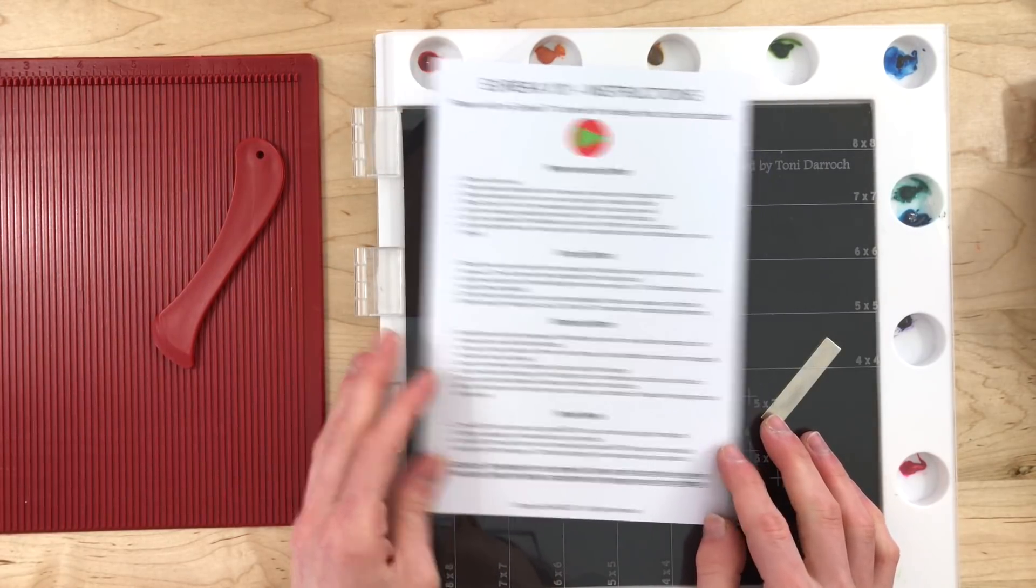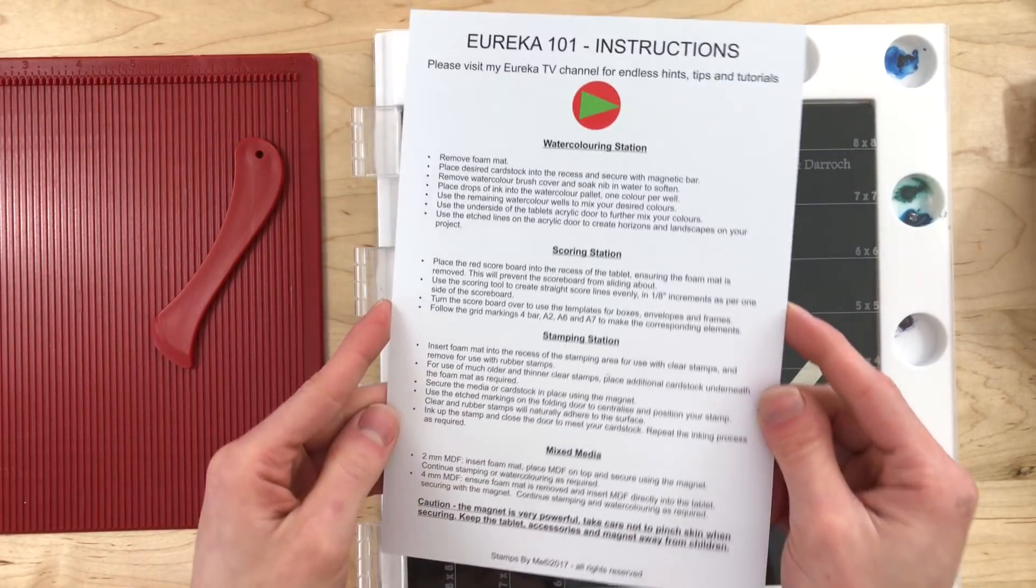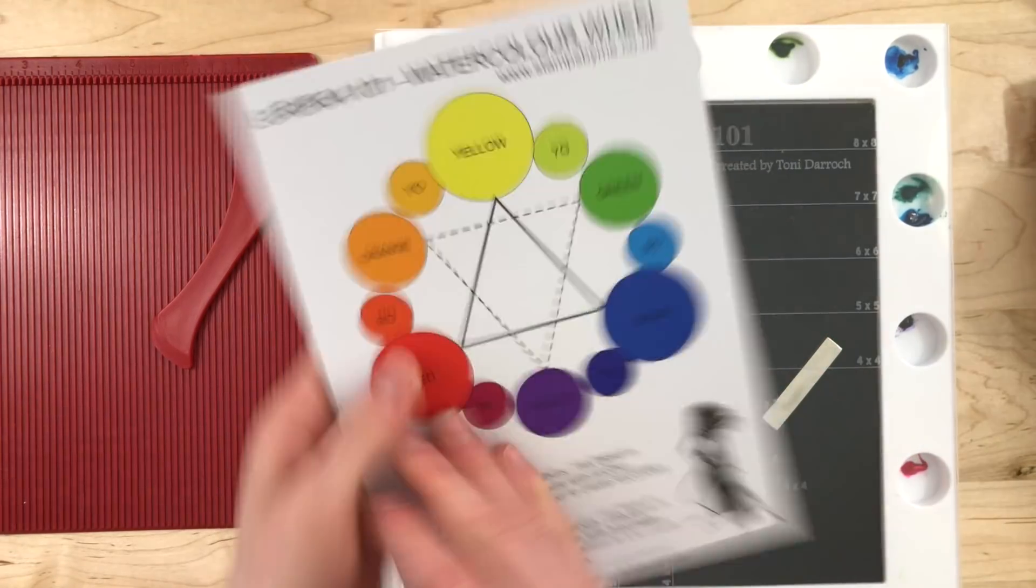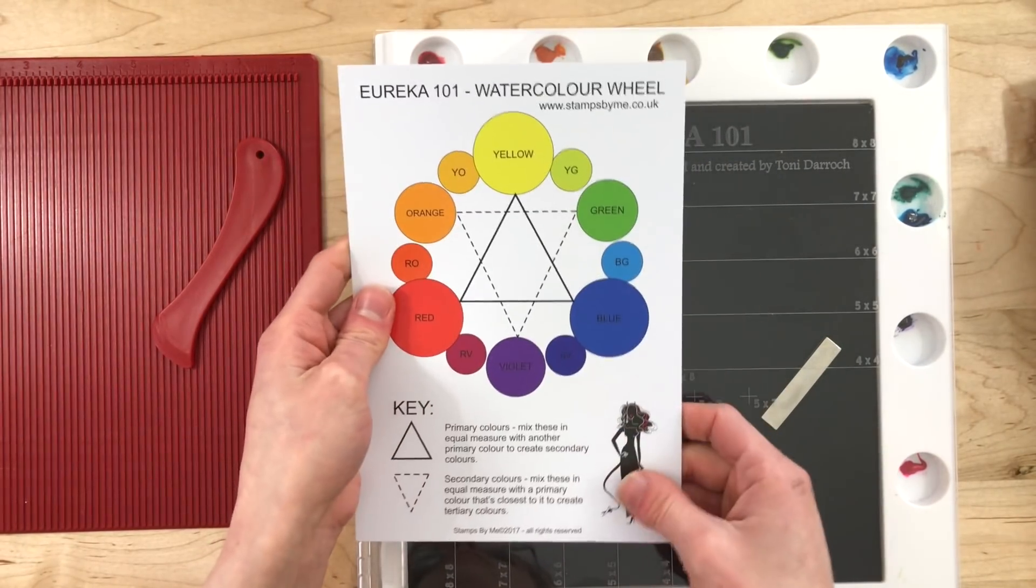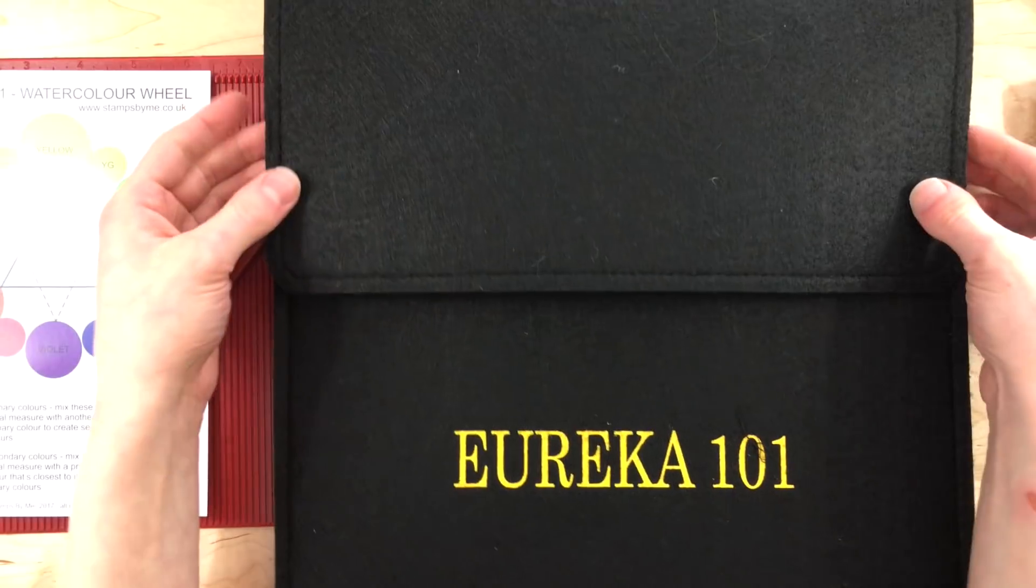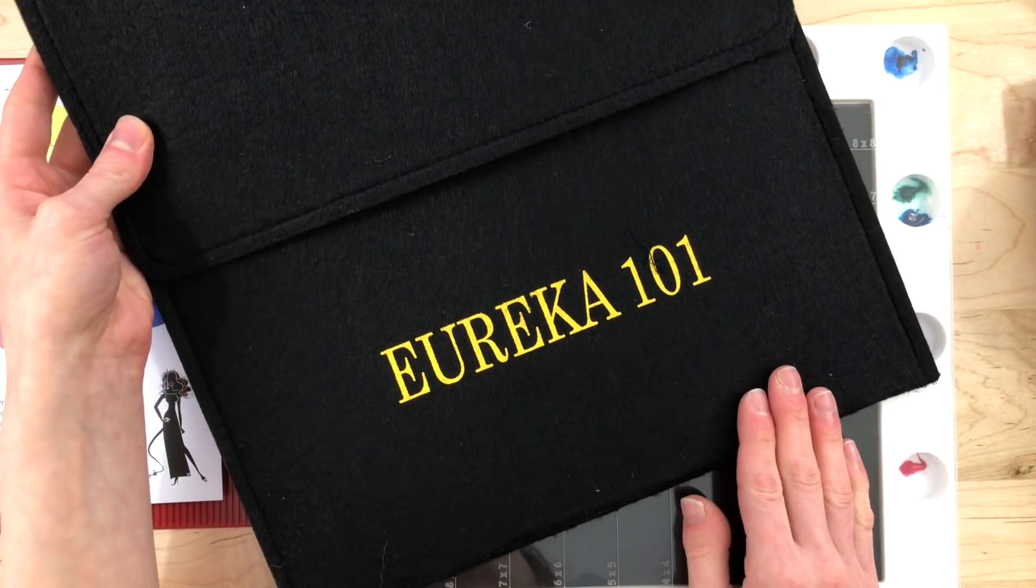When you get your Eureka watercoloring tablet, you also get a little instruction sheet that talks about all the different things you can do with this platform. There's also a little color wheel on there as well for reference for when you're choosing colors.